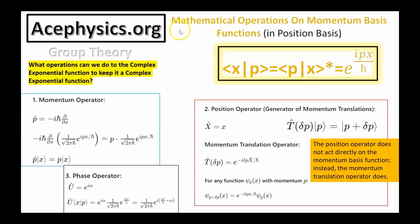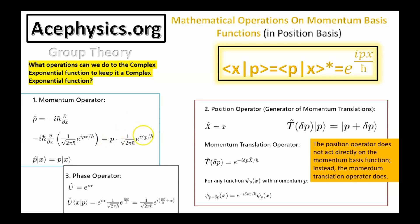On this slide, I discuss the mathematical operations that can be performed on momentum basis functions, written in the position basis. What operations can we do to the complex exponential function to keep it a complex exponential function? We've already learned there are three fundamental operators. One of them is the momentum operator: p equals minus i h-bar d by dx. This is a Hermitian operator, and it turns out this is an eigenvalue equation — if I act this operator on the complex exponential, I get p times the complex exponential back.